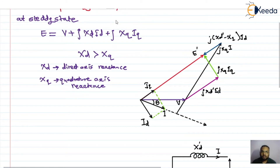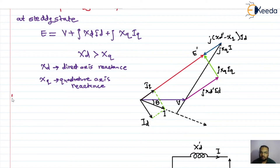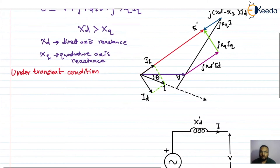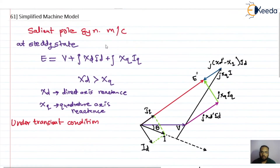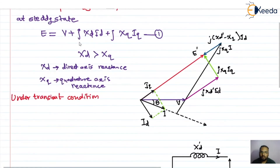Now let's say a transient has occurred in the machine due to some disturbances, and the machine is now operating in a transient condition. Under transient condition, let us call the steady state equation as equation number one.